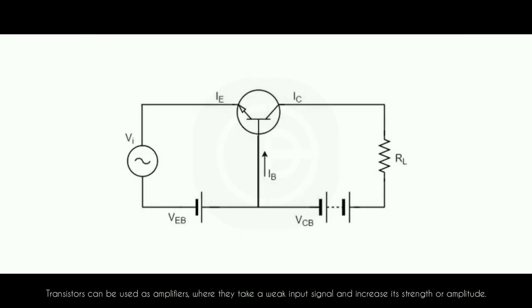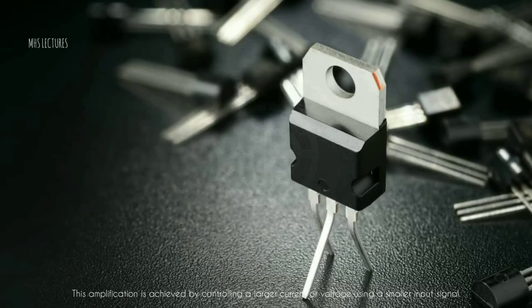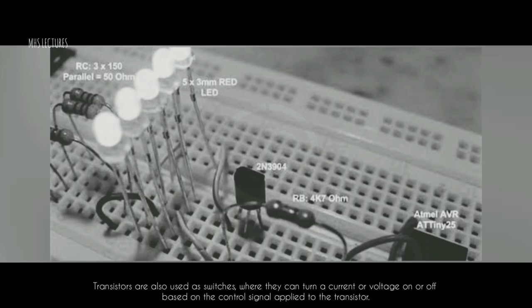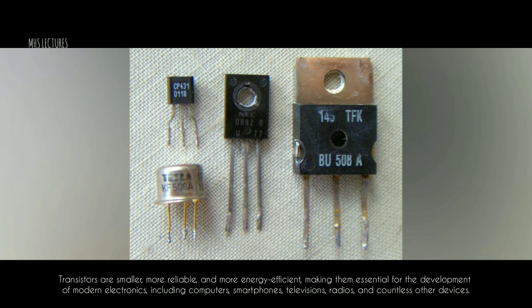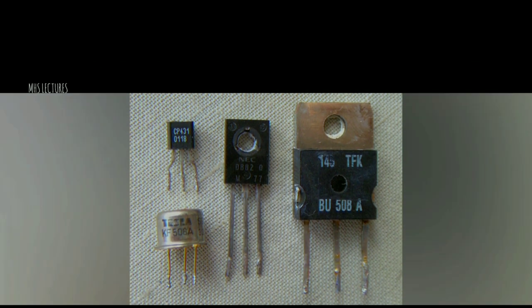Transistors can be used as amplifiers, where they take a weak input signal and increase its strength or amplitude. This amplification is achieved by controlling a larger current or voltage using a smaller input signal. Transistors are also used as switches, where they can turn a current or voltage on or off based on the control signal applied. The invention of transistors revolutionized electronics by replacing bulky and power-hungry vacuum tubes. Transistors are smaller, more reliable, and more energy efficient, making them essential for computers, smartphones, televisions, radios, and countless other devices.